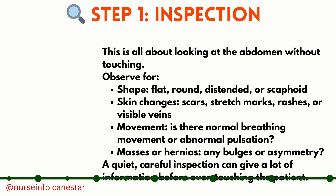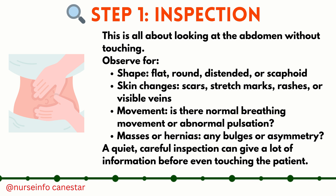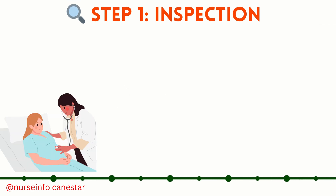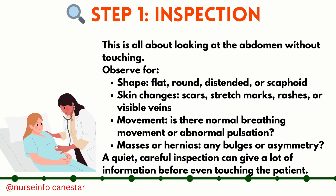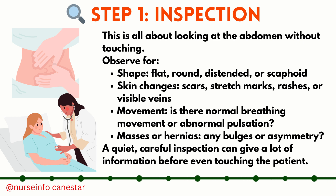Step one: inspection. This is all about looking at the abdomen without touching. Observe for shape — flat, round, distended, or scaphoid — skin changes such as scars, stretch marks, rashes, or visible veins, movement including normal breathing or abnormal pulsation, and any masses, hernias, bulges, or asymmetry. A quiet, careful inspection can give a lot of information before even touching the patient.